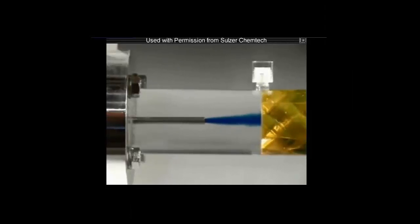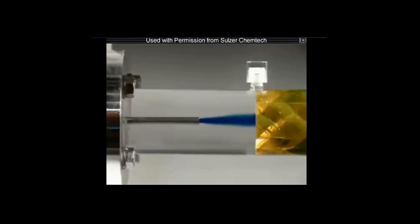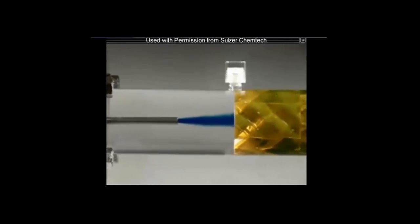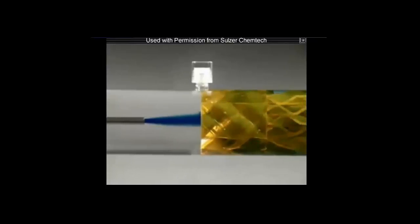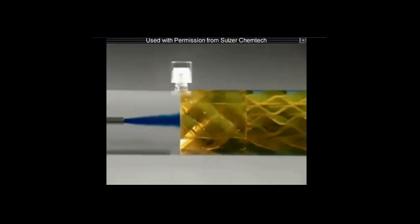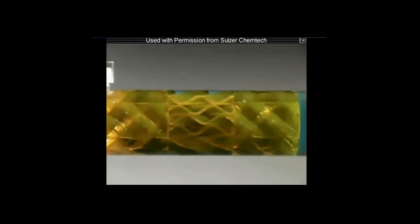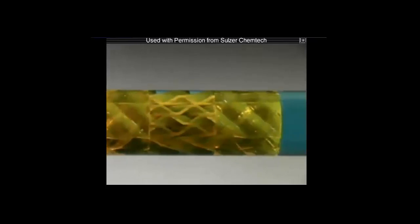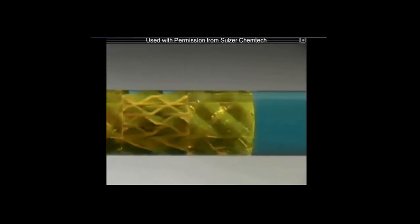In this experiment, we will look at turbulent blending in a Sulzer-Chemtech SMV static mixer. The blue color stream is mixed with water. The corrugated sheets form a series of open channels, which cross into one another. The mixture is homogeneous after only a few elements.